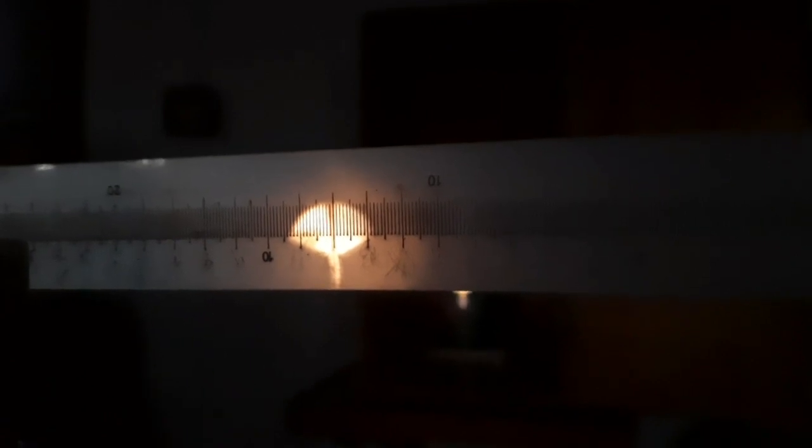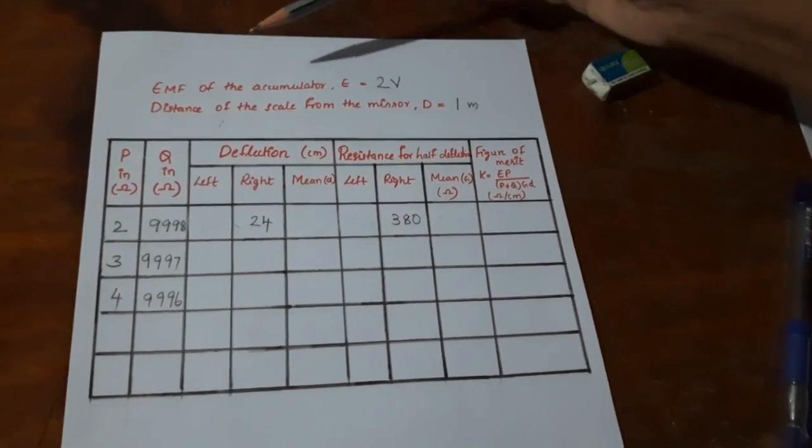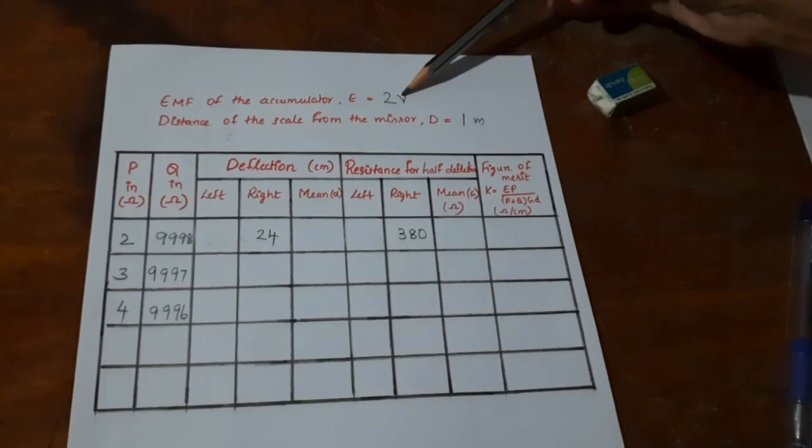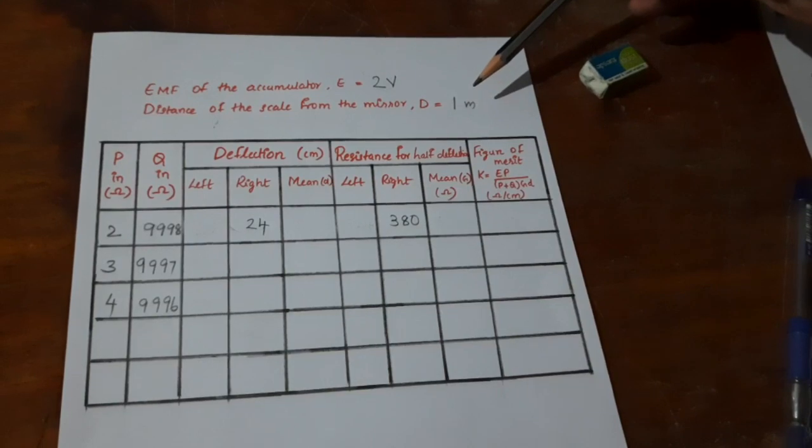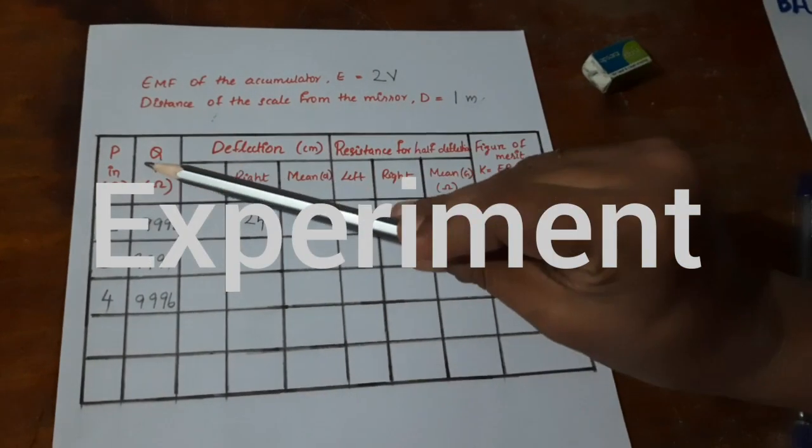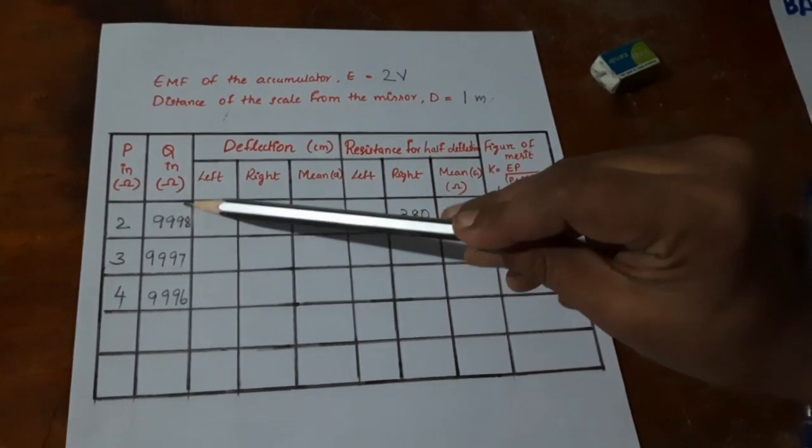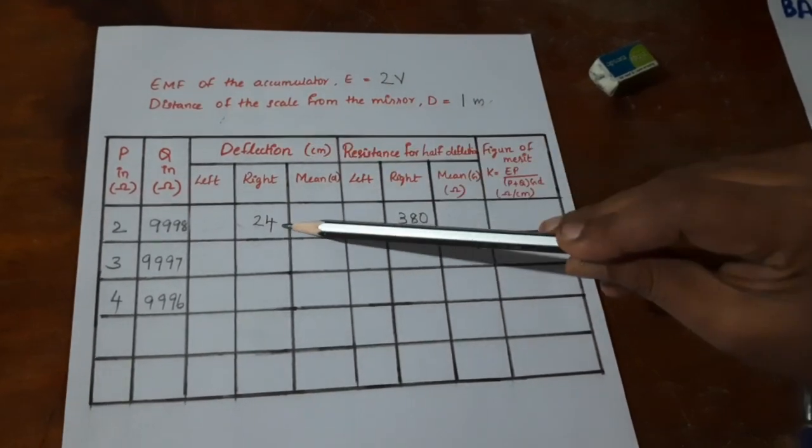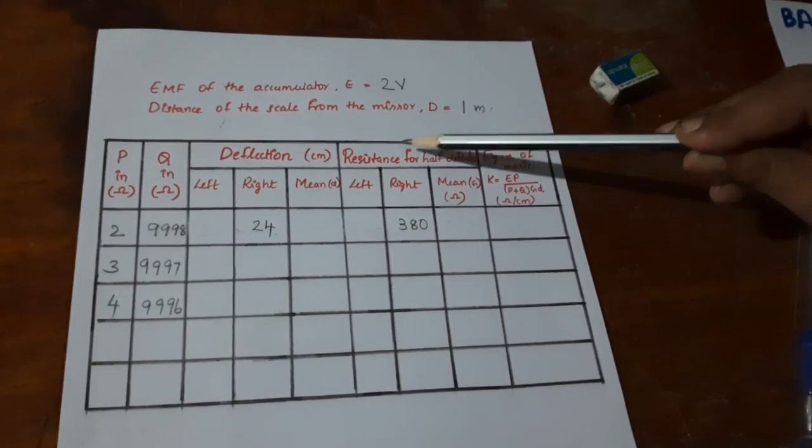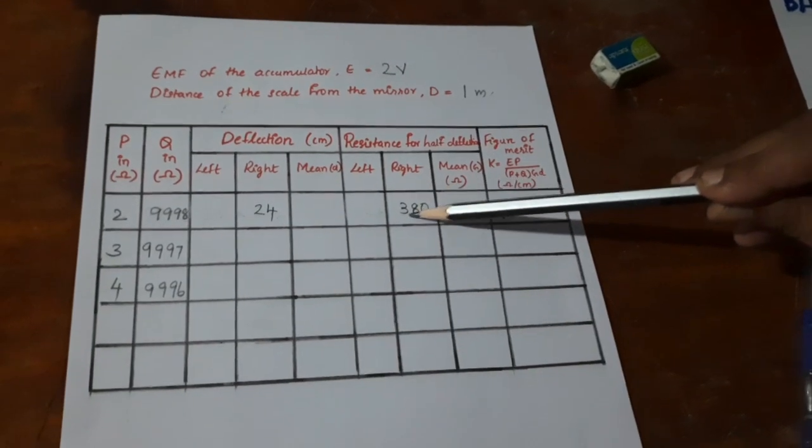The deflection has come up to 24. Now we will have to reduce this deflection to half of it, that is 12 centimeters, by introducing a resistance in our resistance box R. The deflection is reduced to half, that is 12, and at this stage I have introduced a resistance of 380 ohms in the resistance box R. Coming to the tabular column, EMF of the accumulator 2 volt, distance of the scale from the mirror is arranged at 1 meter. We have introduced a resistance P 2 ohms, then our Q is 9998. Our deflection to the right was 24 centimeters, and the resistance for half deflection we got it as 380 ohms.